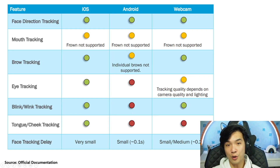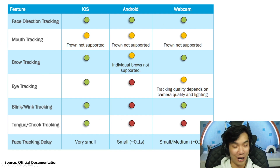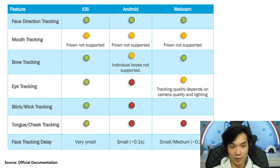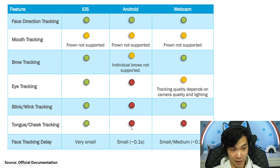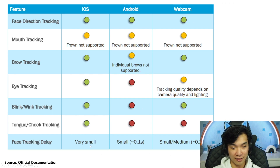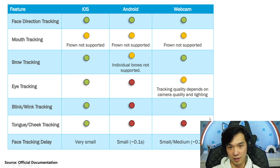This is the overview from the official documentation, which I found after I made this comparison. I'm glad the result is quite consistent with my impression. iOS is best performance, all green. Android I can't show unfortunately. But the webcam is quite nice. iOS has very small tracking delay while on webcam it is small to medium, and you don't really see the differences. This is very consistent with my observation too.